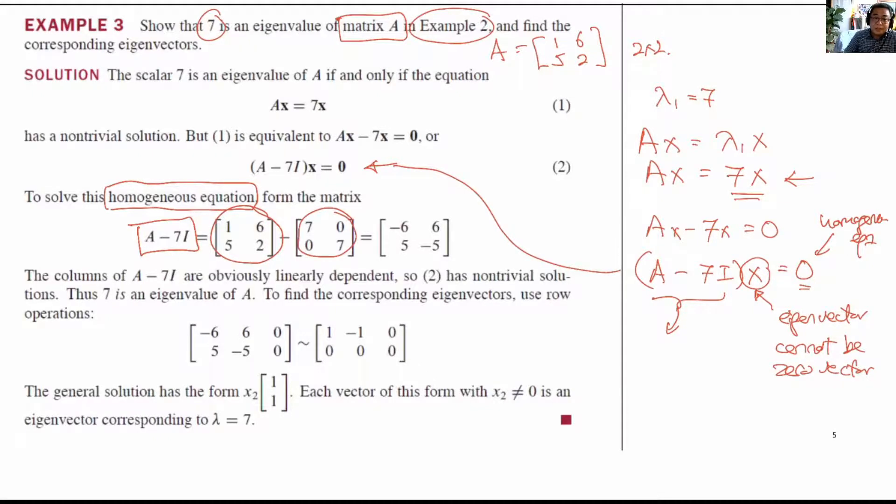7I is nothing but the constant 7 multiplied by the identity matrix of 2 by 2 in this example. And therefore we have this matrix here. We work out the numbers, and the numbers is very interesting. It's [-6, 5] for the first column, [6, -5] for the second column.